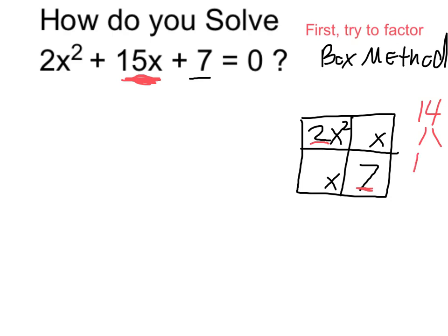So my possible factors are 1 and 14, or 2 and 7, and clearly it's the 1 and 14 that actually add up to 15.